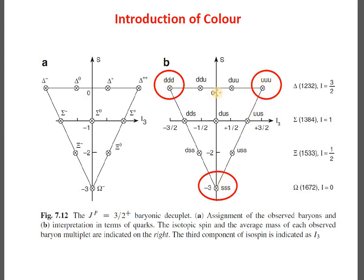What's very interesting are the three particular cases: DDD, UUU, and SSS. The reason is that quarks are fermions — spin-half particles — so Pauli's exclusion principle applies to them. For these three particular decuplet baryons we have identical quarks, so there will be a problem in this regard.